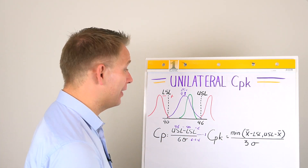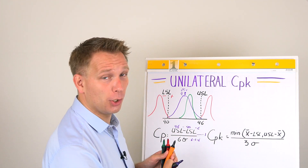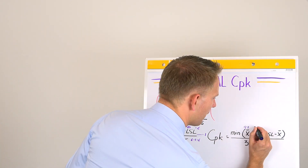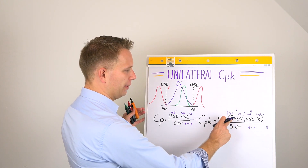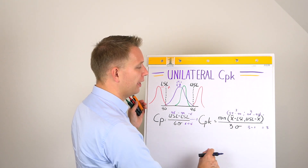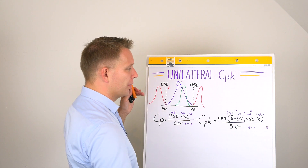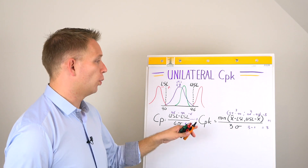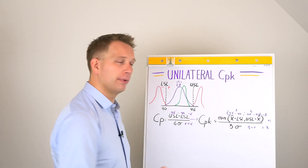For CPK we fill in basically the same numbers, but we also have the mean of our product distribution — 43 — in the mix. We have mean minus lower spec limit: 43 minus 40 equals 3. Upper spec limit minus mean: 46 minus 43 is also 3. We pick the lowest of these two — the minimum of 3 and 3 is still 3 — so 3 divided by 3 gives a CPK of 1.